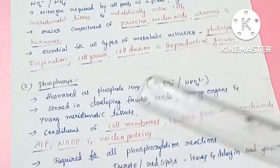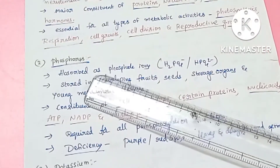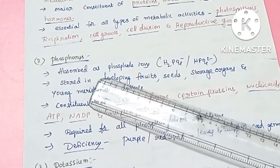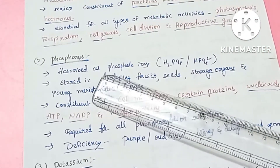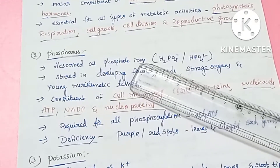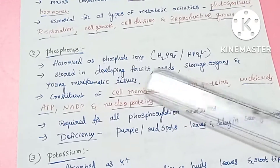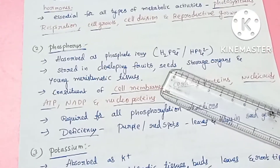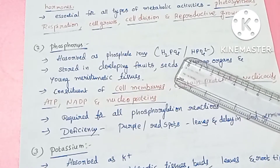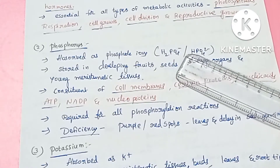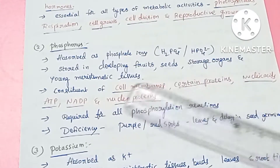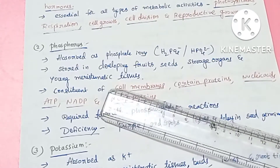The next element is phosphorus. Phosphorus is absorbed in the form of phosphate ions — specifically H2PO4- and HPO4-2. Plants absorb phosphorus in these forms.